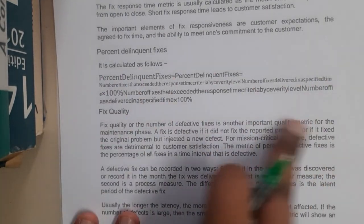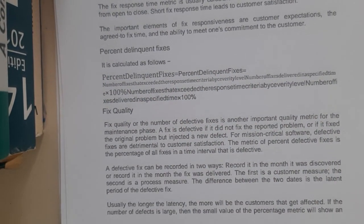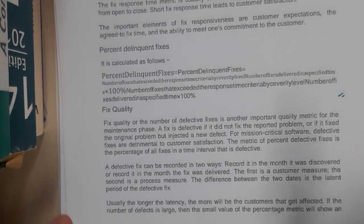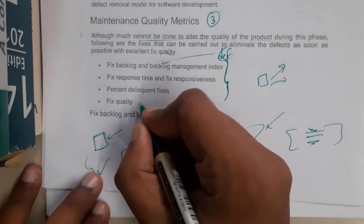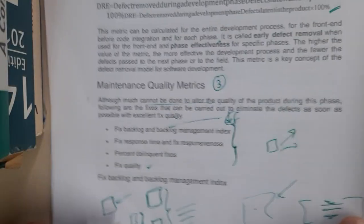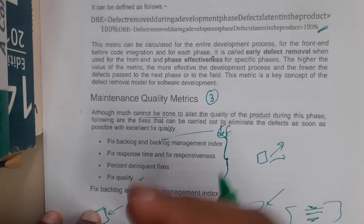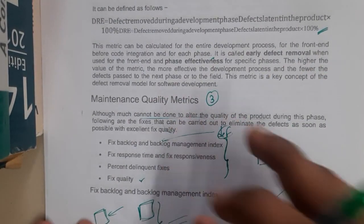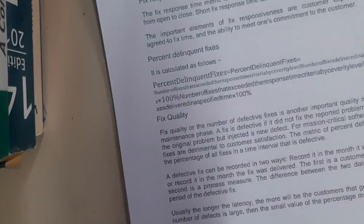Percentage delinquents fixed also has a formula, though I'm not fully certain about the exact usage of these formulas. Similarly, fix quality — whatever you have resolved, the quality can be calculated using a formula. So I hope everyone got a basic idea about maintenance quality metrics — basically whatever we are trying to maintain can be represented in terms of matrices.